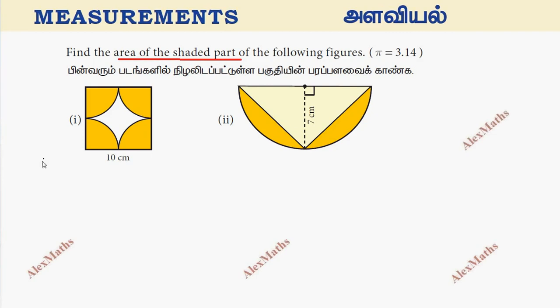For the first subdivision, we have 4 corners and quadrants.